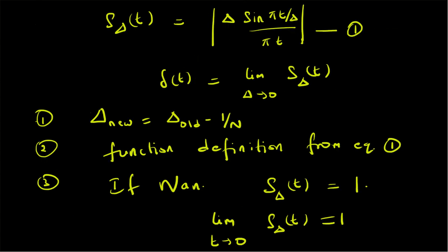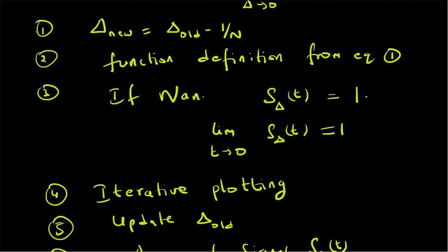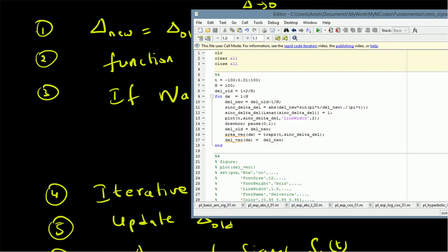To summarize, we have looked at a sinc-function-based approximation for the delta signal: s_delta(t) = |δ · sin(πt/δ) / (πt)|, which is a sinc function — sinc(πt/δ) — serving as an approximation for the delta function.